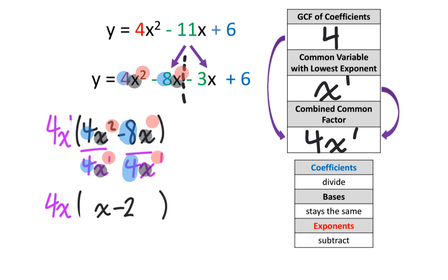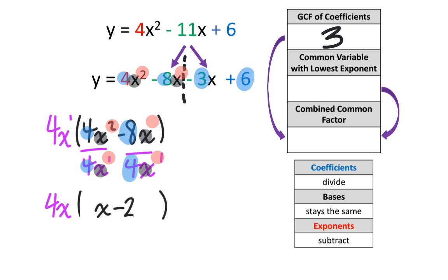We're going to repeat the same process with the next two terms. First, we want to find the greatest common factor of the coefficients — we have 3 and 6, and the greatest common factor of 3 and 6 is 3. Next, we want to find a common variable with the lowest exponent. This term has a variable of x, but this term doesn't, so they don't have a common variable. Therefore, the combined common factor is just 3.